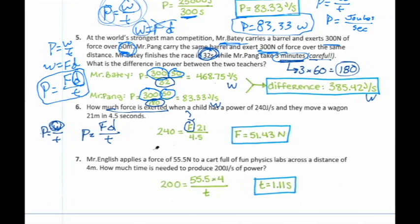In order to do that, it would look something like this. 240 times 4.5, so that I can get rid of that on that side, equals F times 21. So I do my 240 times 4.5, figure out what that is, divide by 21, and I'm left with F. And that gives me a force of 51.43 newtons or 51.4 newtons would also be fine.